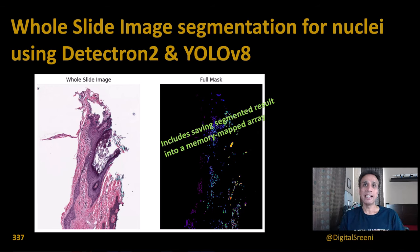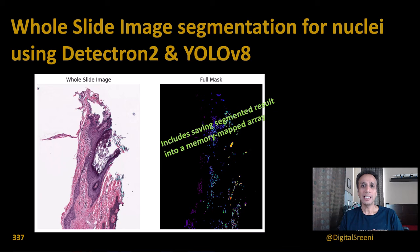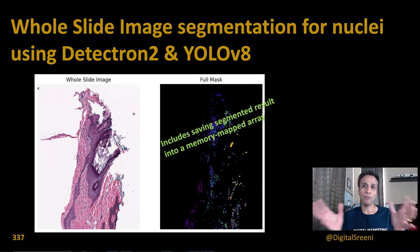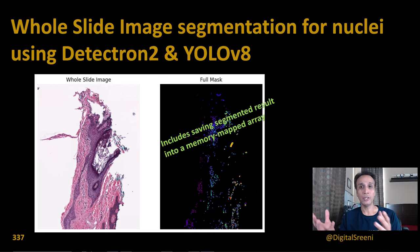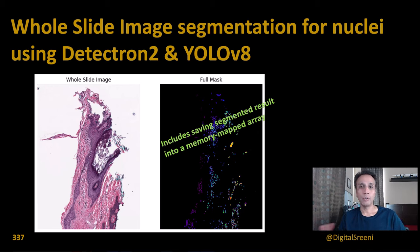If you're working with very large whole slide images, you can still segment them patch by patch, but the problem is when putting them together into a full slide you may not have enough memory to handle that. For that, we'll look at a very straightforward feature offered by NumPy called memory mapping, where instead of storing it in your RAM you're directly writing it to your hard drive, so you're not limited by the amount of RAM you have.